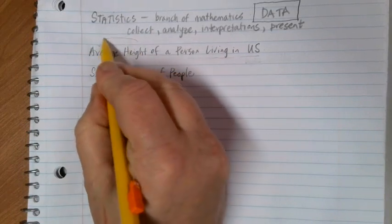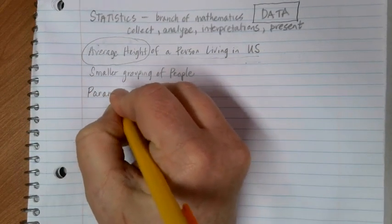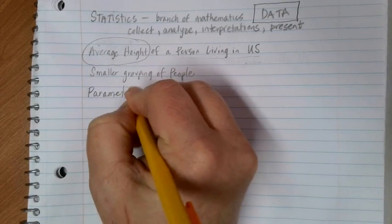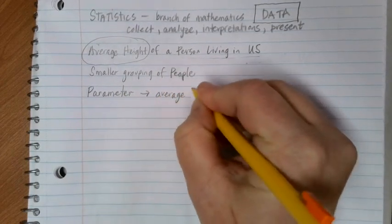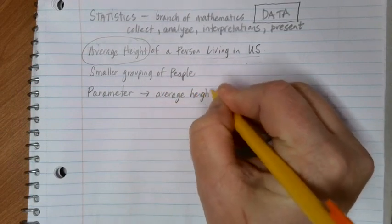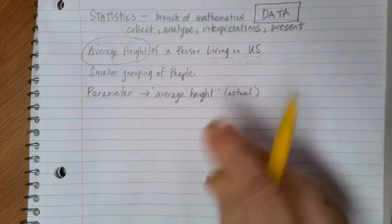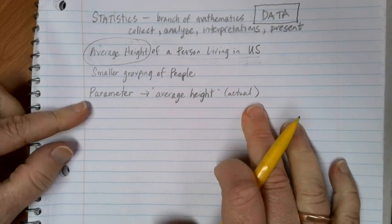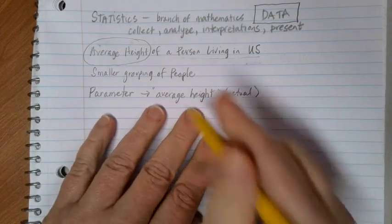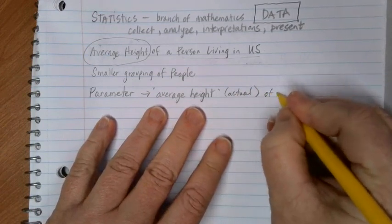If I'm interested in finding the average height of someone, that actual average height is something that we call a parameter. This is the actual average height where every single person is contacted. And pretty much unless we're in a situation where we can talk to every single person, we're not going to be able to find this parameter, which is the actual average height of the entire population.